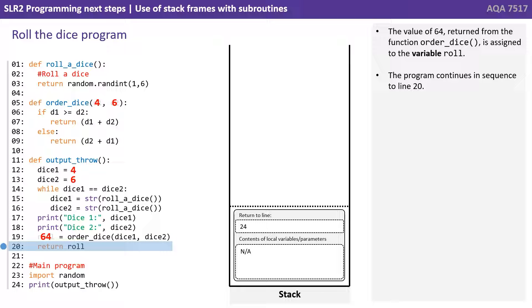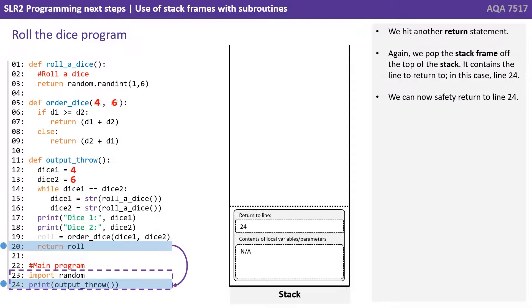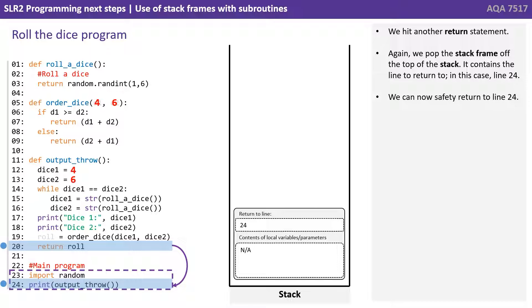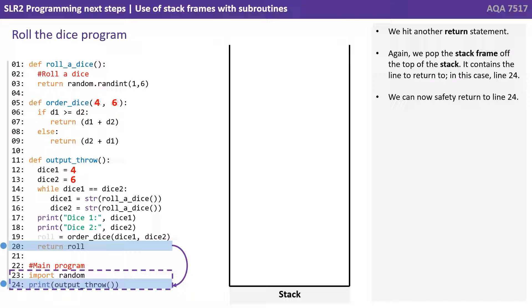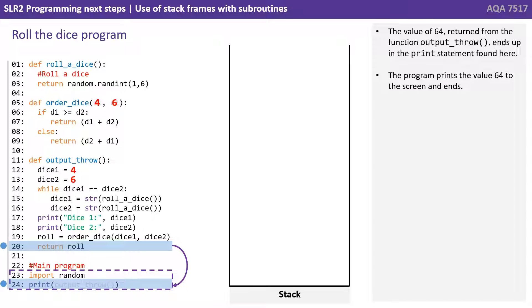The program continues in sequence to line 20, where we hit another return. Again, we simply pop the stack frame currently on the top of the stack. It contains the line to return to — in this case line 24. We can now safely return there. The value 6-4 returned from the function OutputThrow ends up in the print statement. The program prints the value 6-4 to the screen and ends.